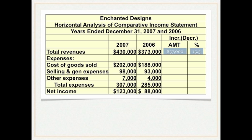For cost of goods sold, the dollar amount of change was $14,000, and your percent change should have been 7.4%. To recap: $14,000 is the difference between the base year of $188,000 and $202,000. To get the percent change, we take the dollar amount of the change, $14,000, and divide that by the base year amount of $188,000, giving us 7.4%.